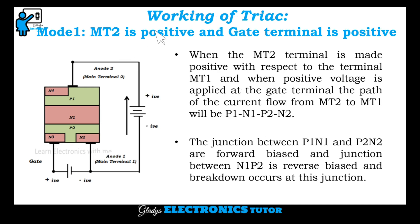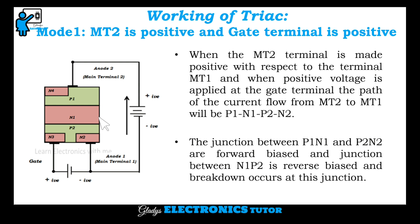Next, we will see about the working of TRIAC. First is mode one: MT2 is positive and gate terminal is positive. When MT2 terminal is made positive with respect to MT1 and positive voltage is applied at the gate terminal, the path of current flow from MT2 to MT1 will be P1, N1, P2, and N2. The junctions between P1-N1 and P2-N2 are forward biased, and the junction between N1 and P2 is reverse biased, causing breakdown at this junction.